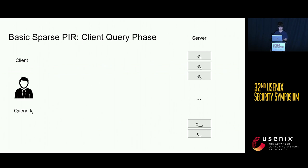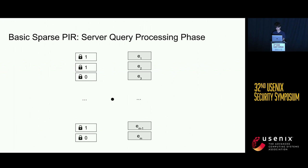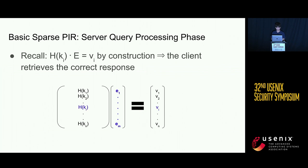During the query phase, the server contains the encoded database e1 through em. If the client wants to query for keyword ki, it constructs a length-m query vector — where h(ki) corresponds to this query vector — encrypts it using the homomorphic encryption scheme, and sends this length-m vector to the server, which performs the dot product and returns the result to the client. Correctness is easy to see: h(ki) dot-product with the encoding e equals vi by construction, so the client retrieves the correct response. The blue entries in the diagram correspond to the entries that the client retrieves.